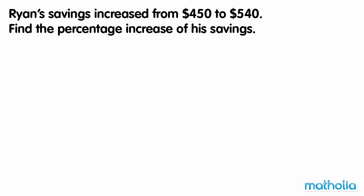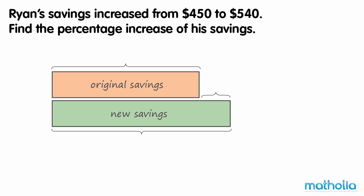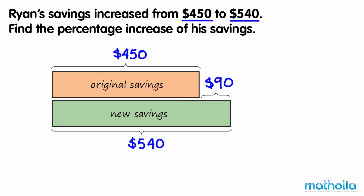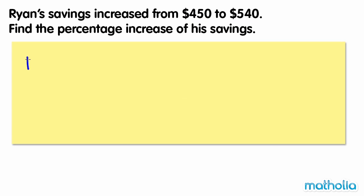Ryan's savings increased from $450 to $540. Find the percentage increase of his savings. Using a model, we can see that Ryan's savings increased by $90. To find the percentage increase in savings, let's first find the fraction increase, then convert it to a percentage.